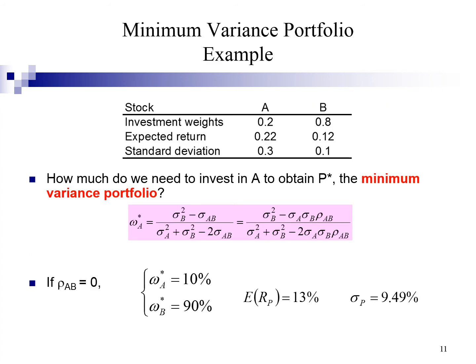Next, we are going to use the same example to construct the minimum variance portfolio. Here, we assume the correlation of AB is 0. First, I hope you can try substituting the data into the formula and calculate the rates of investment in A and B. After that, make use of those rates to calculate the portfolio expected return and standard deviation. The final answer is shown in the slide to motivate you. After that, we can compare the answer with Excel Solver. Let's try.